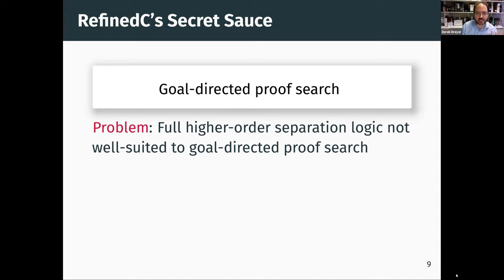What makes this difficult is that we're not just working in some simple separation logic — we're working in full higher-order separation logic. The theorems we're proving make use of the full features of Iris, including higher-order quantification, invariants, recursive predicates, and so forth. In general, these features are not well suited to goal-directed proof search.